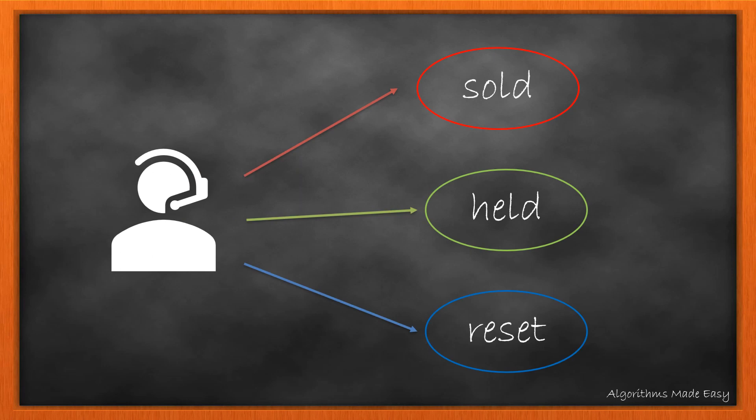He will be in the sold state when he has sold the shares and made profit. He will be in the held state when he bought the shares. And lastly, he will be in the reset state when he does nothing on that day, i.e., no buying or selling.